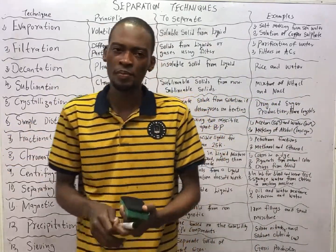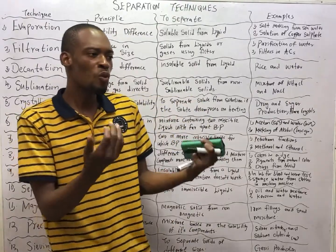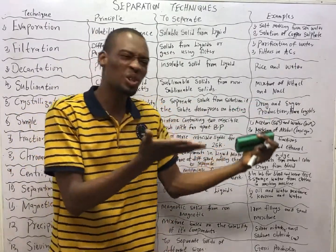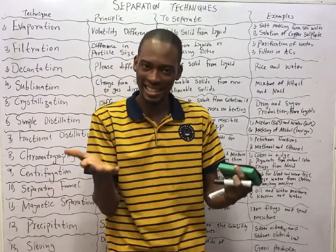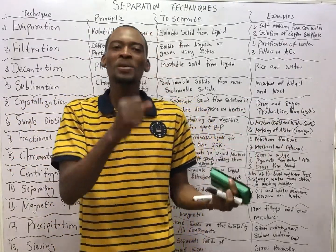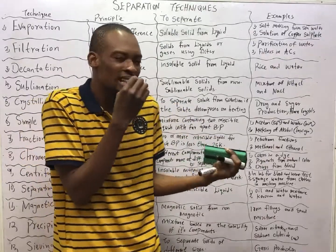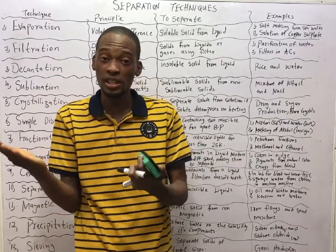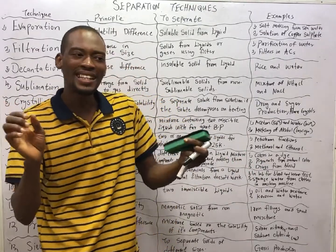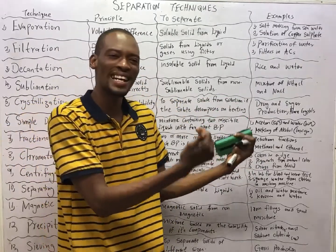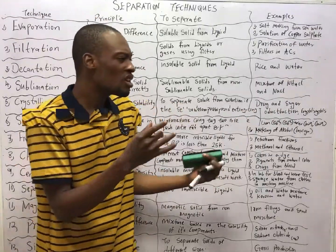Take a look at sea water. Water is supposed to be colorless, odorless, and tasteless. But when you take in sea water, you notice that it is salty. In that case, it is a mixture — we have water and salt.